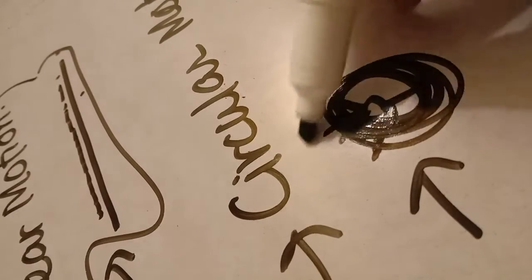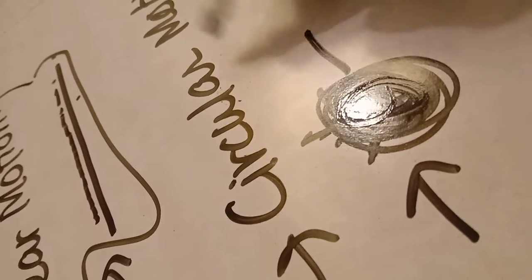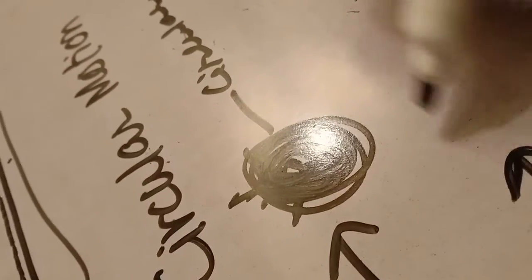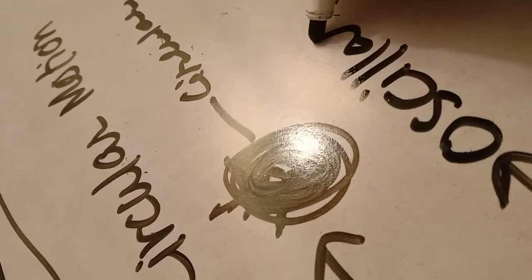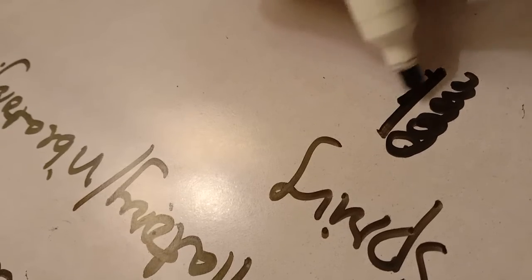The second type is circular motion. Whenever a body is moving in a circular or rotatory way, it is known as circular motion. For example, a fan is continuously moving in a circular, rotatory motion — so it is doing circular motion.